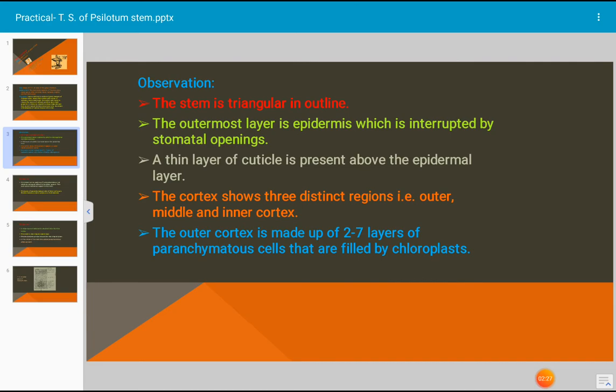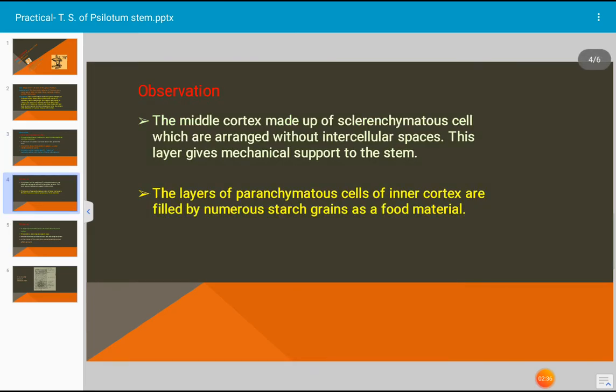The outer cortex is made up of 2 to 7 layers of parenchymatous cells that are filled by chloroplasts. The middle cortex is made up of sclerenchymatous cells that give mechanical support, and the sclerenchymatous cells are arranged without intercellular spaces.